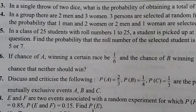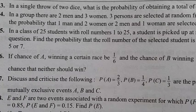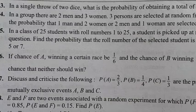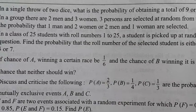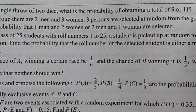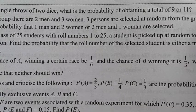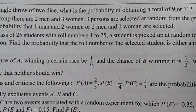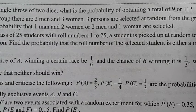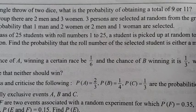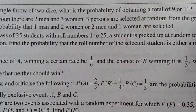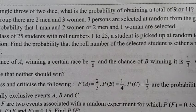Question number 3: In a single throw of 2 dice, what is the probability of obtaining a total of 9 or 11? That means if you throw 2 dice and add the results, what is the probability that the sum is 9 or 11?